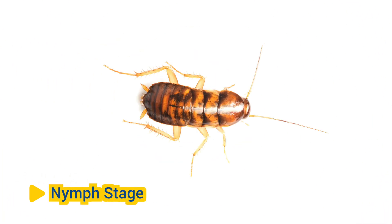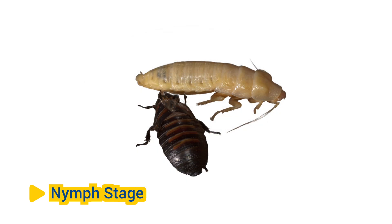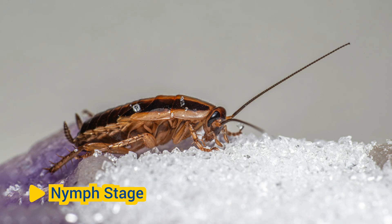Nymph stage. Once the eggs hatch, they give rise to nymphs, which resemble miniature versions of adult cockroaches but lack wings. Nymphs emerge from the oothica and undergo a series of molts as they grow and develop. With each molt, the nymphs shed their exoskeleton — their outer shell — to accommodate their increasing size. Nymphs are active and voracious feeders.